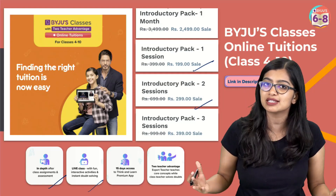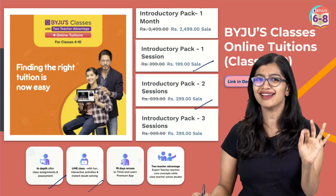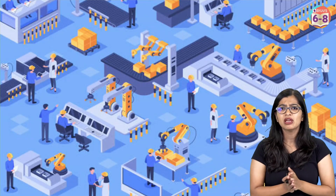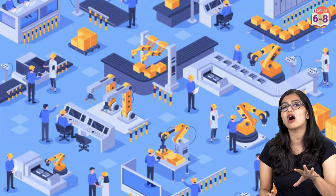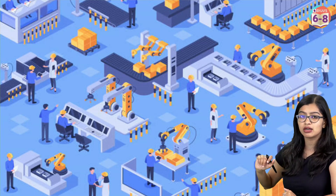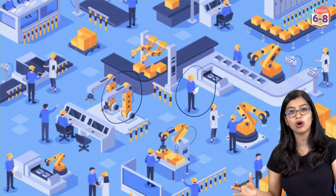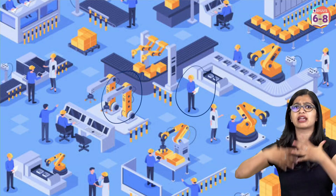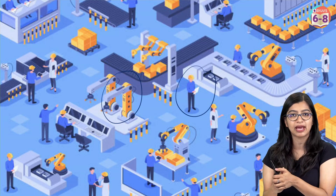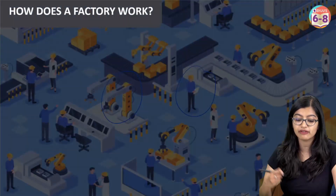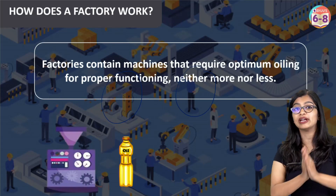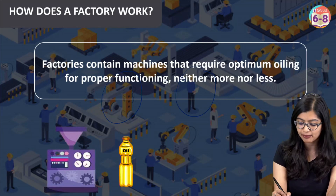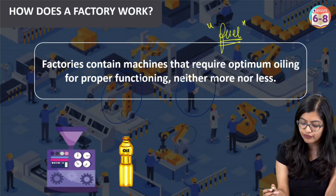Now, before I tell you directly what a balanced diet is, I'm sure all of you have seen factories. What you see right behind me is a simple layout of a factory — many machines, many people working together efficiently so the factory can manufacture its products. For these machines to work effectively, they need to be oiled or fueled properly.